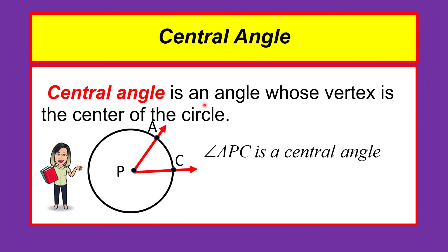A central angle is an angle whose vertex is the center of the circle. The center of the circle is point P. We have angle APC with sides ray PA and ray PC. The vertex of angle APC is the center of the circle, so that angle is considered a central angle.